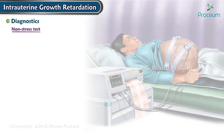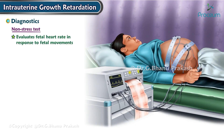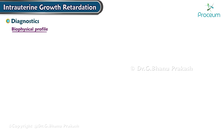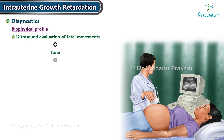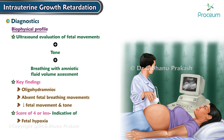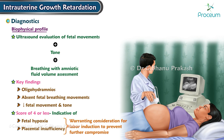The non-stress test evaluates fetal heart rate response to fetal movements; late decelerations or bradycardia can indicate fetal distress associated with hypoxia and placental insufficiency. The biophysical profile combines ultrasound evaluation of fetal movements, tone, and breathing with amniotic fluid volume assessment. Key findings in intrauterine growth restriction include oligohydramnios, absent fetal breathing movements, and decreased fetal movement and tone. A score of four or less is indicative of fetal hypoxia and/or placental insufficiency, warranting consideration for labor induction to prevent further compromise.